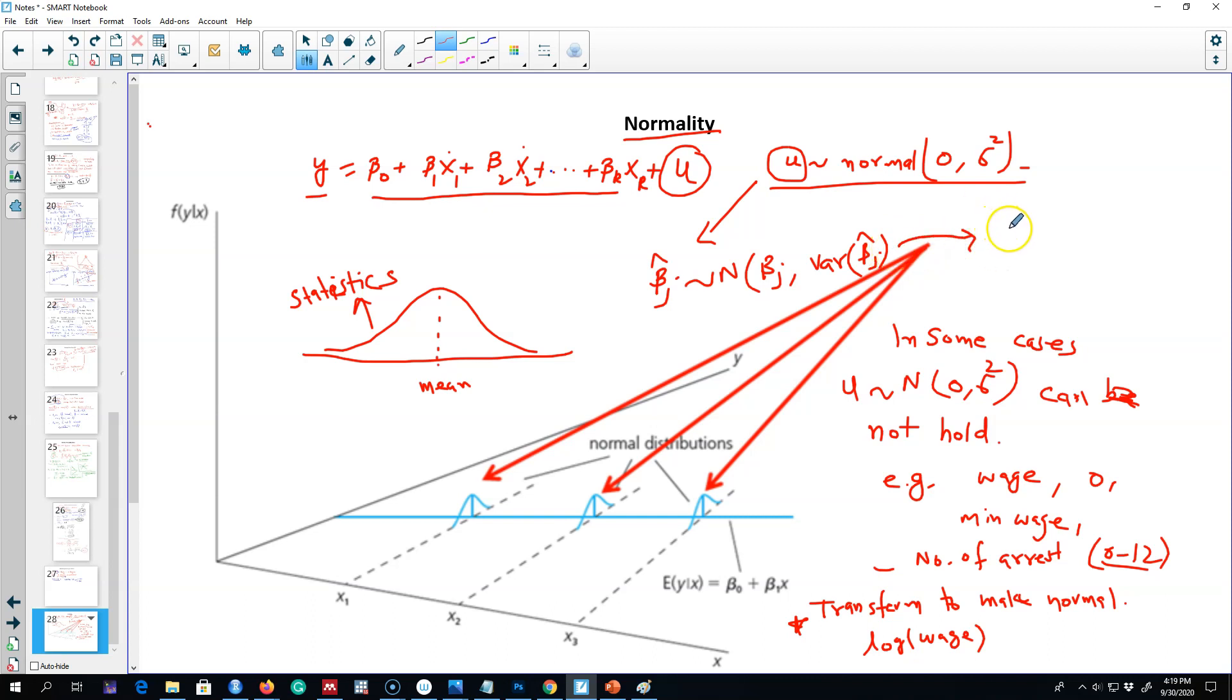This is important because later on, we're going to use a standard normal distribution. We're going to convert our beta coefficients into standardized coefficients using this formula you may have seen in your statistics class. What we are saying is that beta j hat, our estimated value, minus the actual beta j, the population parameter, divided by the standard deviation, is normally distributed around mean 0 and variance 1.